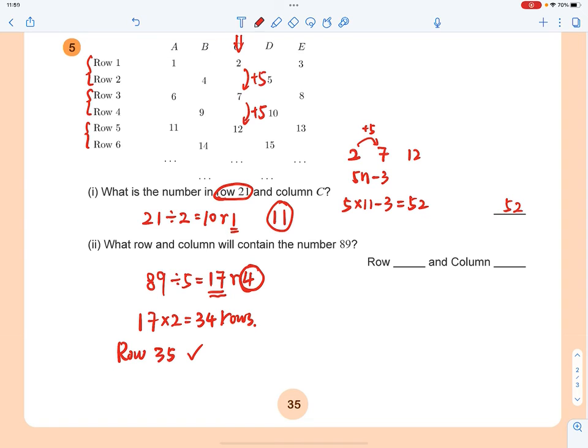But the remainder is 4, not 3. So you have to go to one more row. You go to row 36, and now you have only one number at that row.